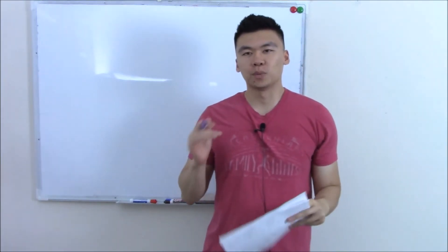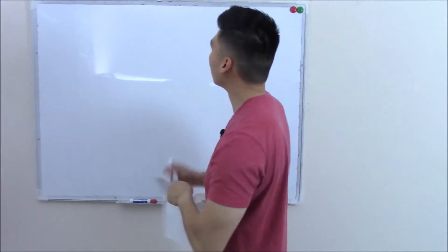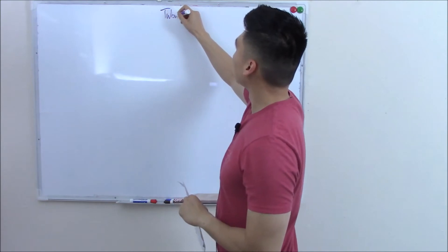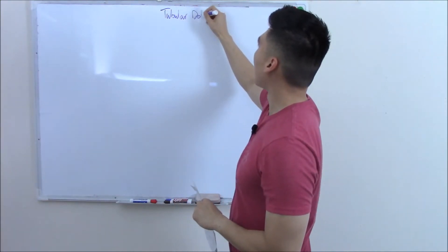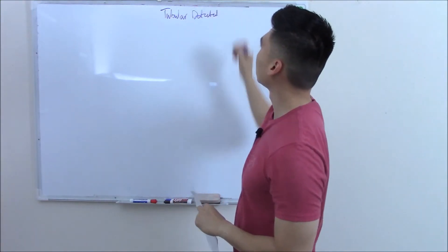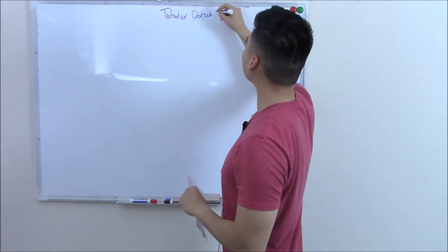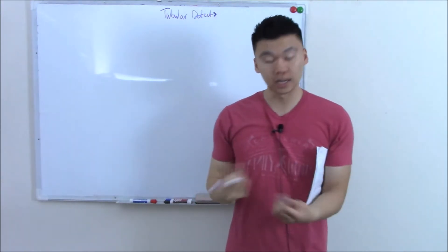This video is on tubular defects. This is either inherited defects or acquired defects in your nephron.